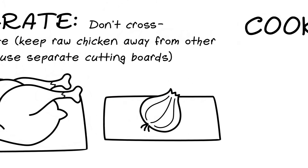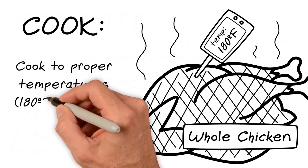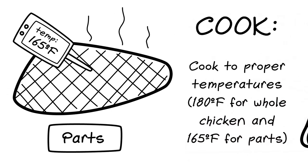Cook. Cook to proper temperatures. 180 degrees Fahrenheit for whole chicken and 165 degrees for parts. Chill. Refrigerate promptly.